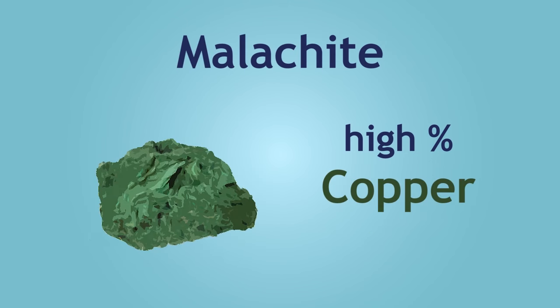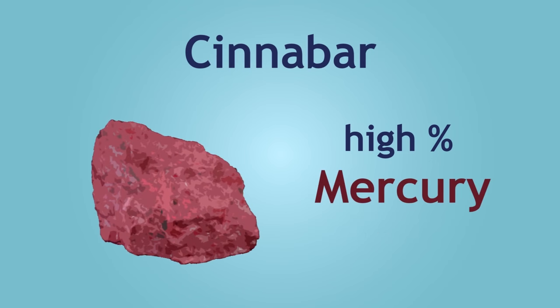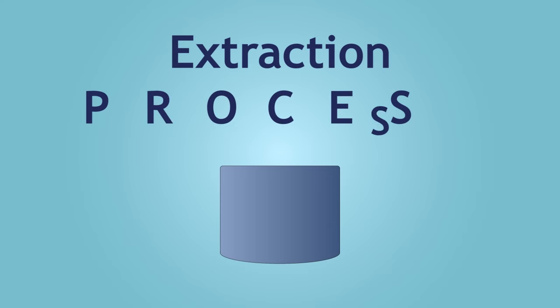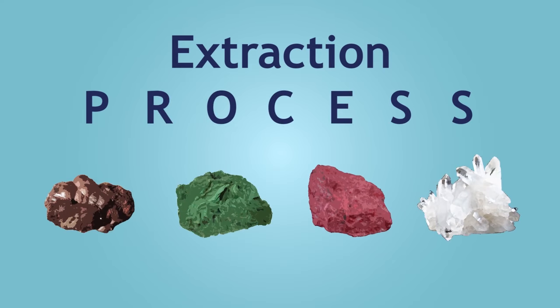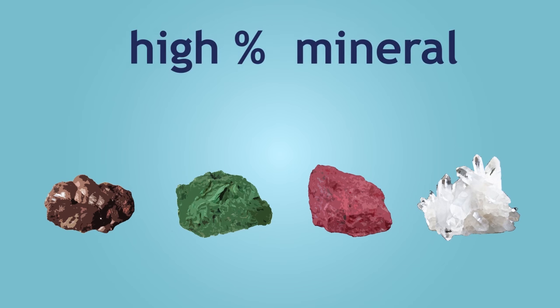The copper in malachite is mostly copper(II) carbonate. The mercury in cinnabar is primarily found as mercury(II) sulfide. The extraction process for each ore can vary, but the key idea is that the mineral must be present in a high enough percentage, or else the process would not be very economically beneficial.